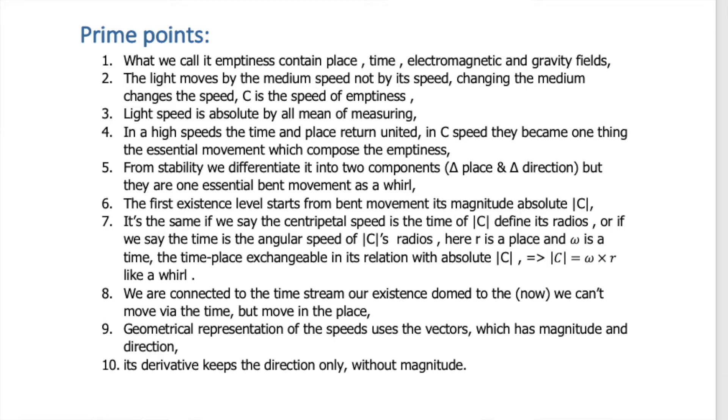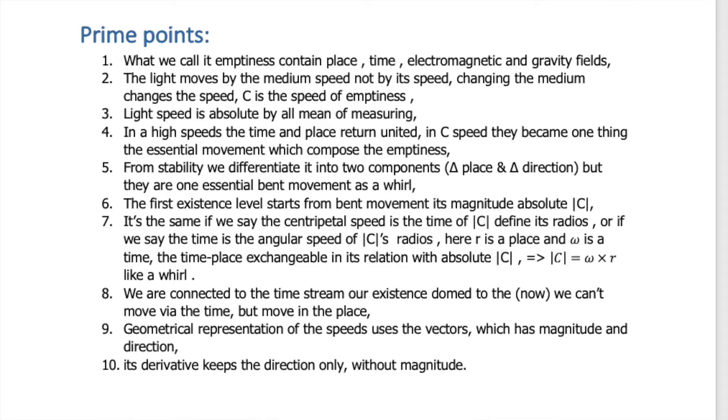We have to start from the speed and from the tangent speed and its curve. The curve may be different — more or less — but the tangent speed is conservative; it is absolute. So when the light moves on this tangent speed, on the circles of the emptiness, it pushes at high speeds where the time and the place return united in light speed.